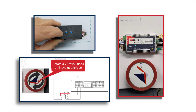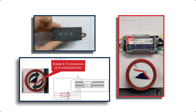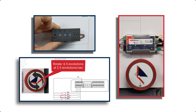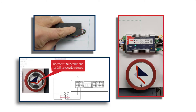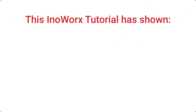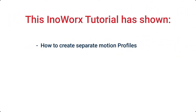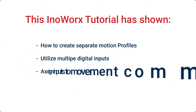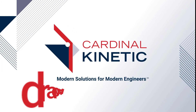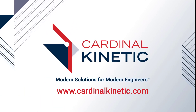As you can see, when we trigger digital input 1, the first move is performed. When we trigger digital input 2, the second move is performed. And when we trigger digital input 3, the third move is performed. This tutorial has shown how to create separate motion profiles, utilize multiple digital inputs, and assign inputs to command the motor to move to predefined positions. We hope you have enjoyed this tutorial. Please visit us at cardinalkinetic.com for more information.